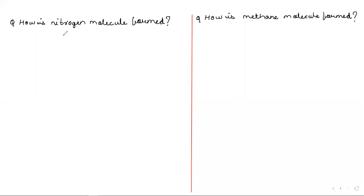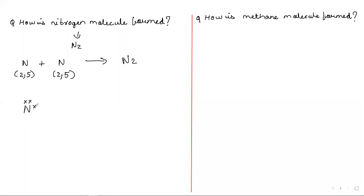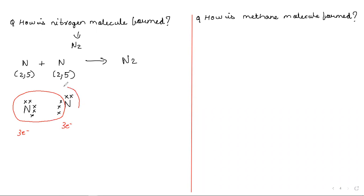How is the nitrogen molecule N2 formed? One nitrogen atom combines with another nitrogen atom to form N2. Electronic configuration is 2, 5 since atomic number is 7. Each nitrogen has 5 valence electrons. This nitrogen requires 3 more electrons, and the other nitrogen also requires 3 more electrons. Mutually, they take 3 electrons from each other. This results in the formation of a triple covalent bond, represented by three dashes.